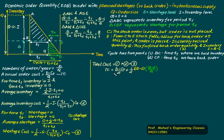Total cost equals equation 1 plus equation 2 plus equation 3. Equation 1 is D times CO divided by Q. In equation 2, I is replaced by (Q minus S), and T1/(T1+T2) is replaced by (Q minus S)/Q, giving one-half times (Q minus S) squared divided by Q, multiplied by CH. In equation 3, T2/(T1+T2) is replaced by S/Q, giving one-half times S squared divided by Q, multiplied by CS.